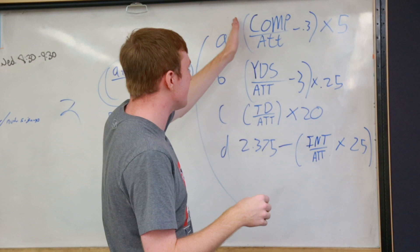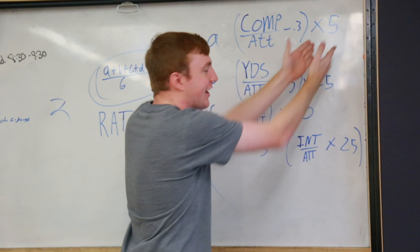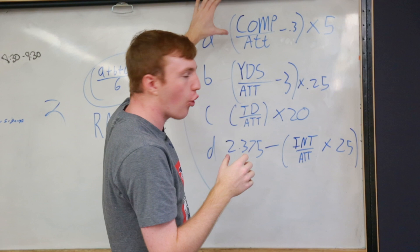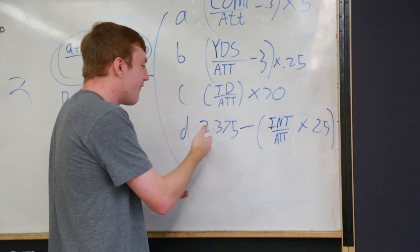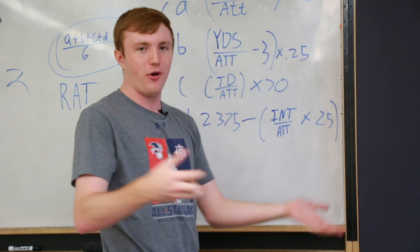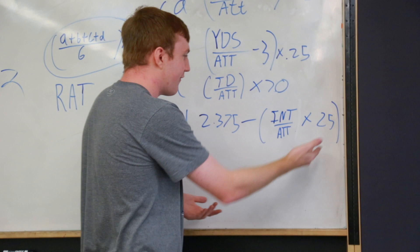So we take completion percentage minus 0.3, times five — there's no reason for there to be a 0.3 and a five in there, we're just saying that's how valuable that quarter of the stat is worth. The next component is minus three times 0.25. The next one is touchdown per attempt times 20. And then we have 2.375 — who came up with that? You don't see 2.375 flying around anywhere.